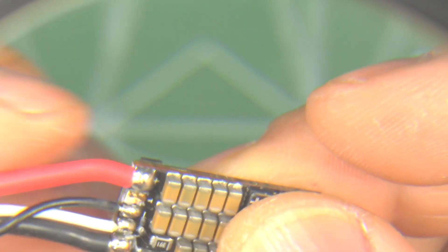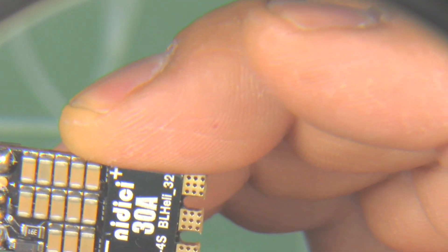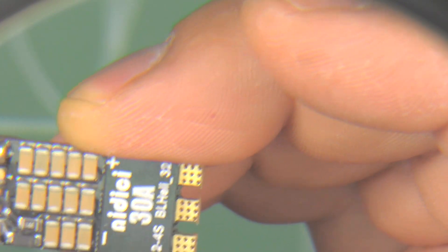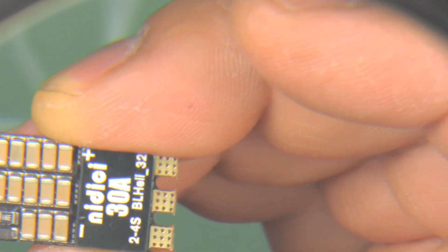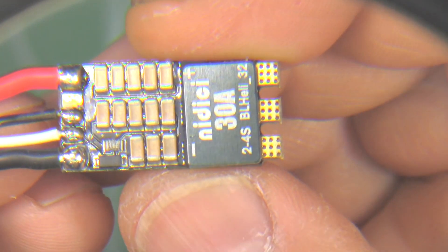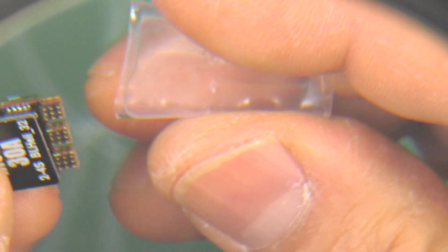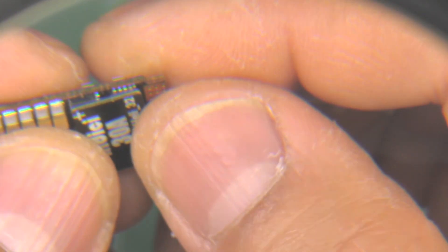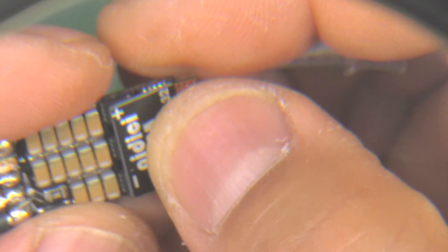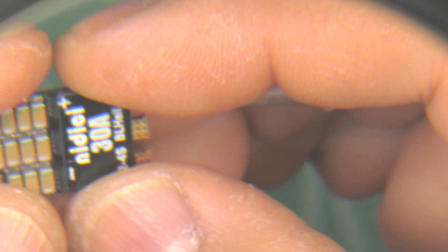I'll do a quick connect to BLHeli 32 and just show you the screen. Not much to see there, only a few of the settings. It'll show you what firmware it came with. I'm going to try and use this on a new build with some of these motors I have for testing. I don't know which motors I'm going to use yet, possibly some 2306 or 2207s.